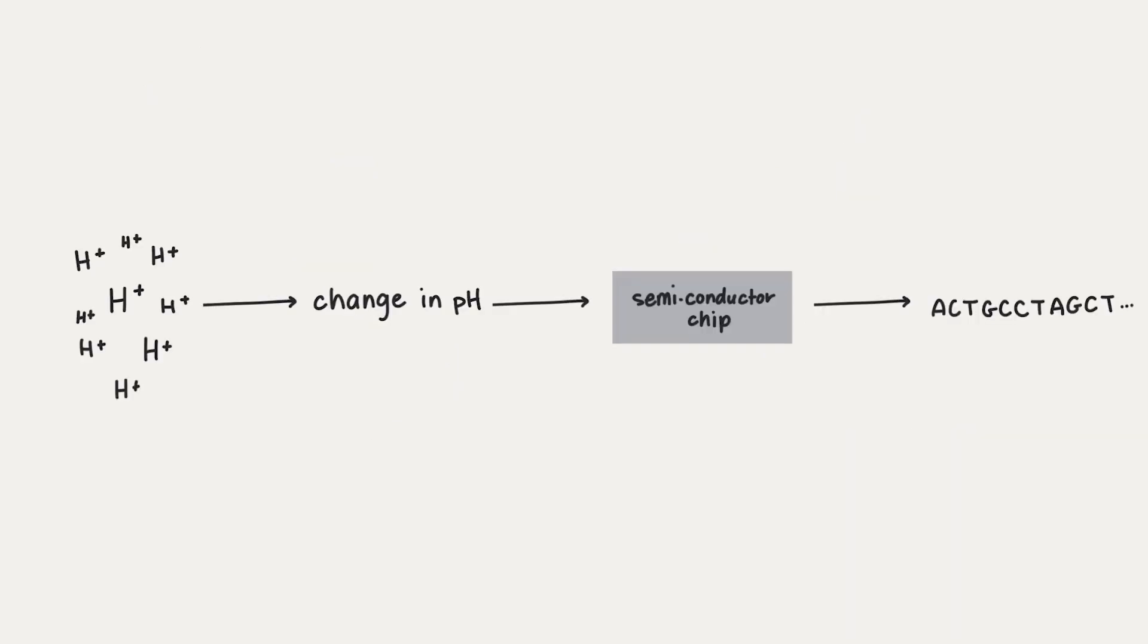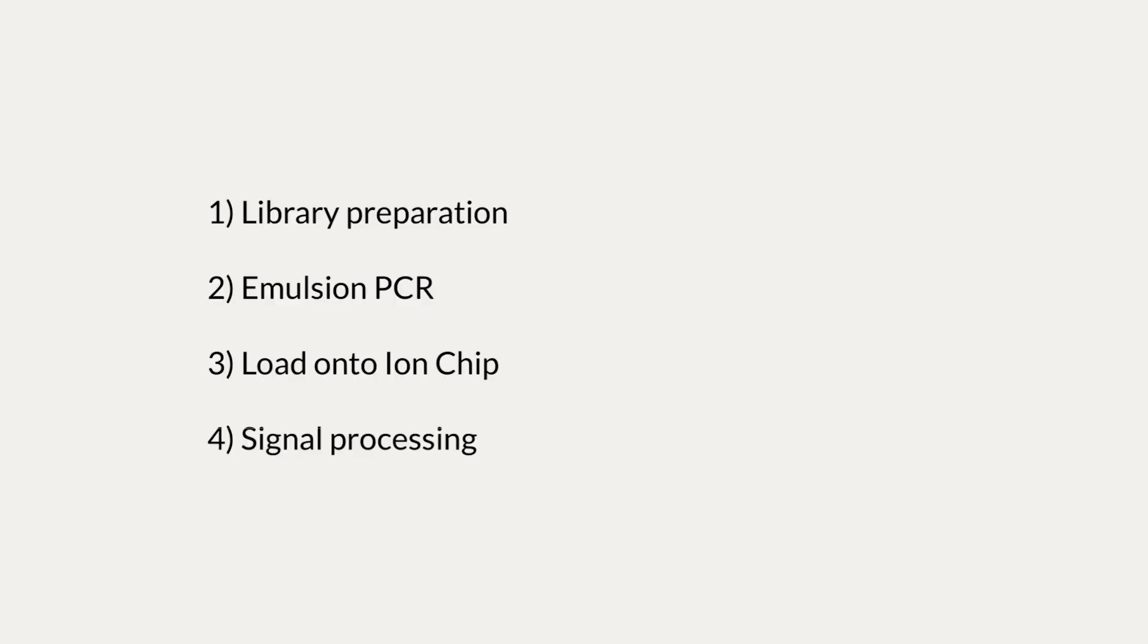In Ion Torrent sequencing, lots of hydrogen ions in a well will cause the pH to change and will change the conductivity detected by a semiconductor chip which we loaded our DNA onto. We can then process these signals to determine the DNA sequence, and it does this in four steps: library preparation, emulsion PCR, loading onto ion chip, and signal processing.